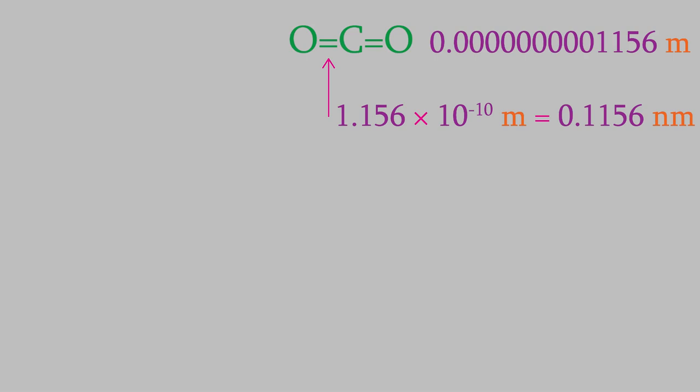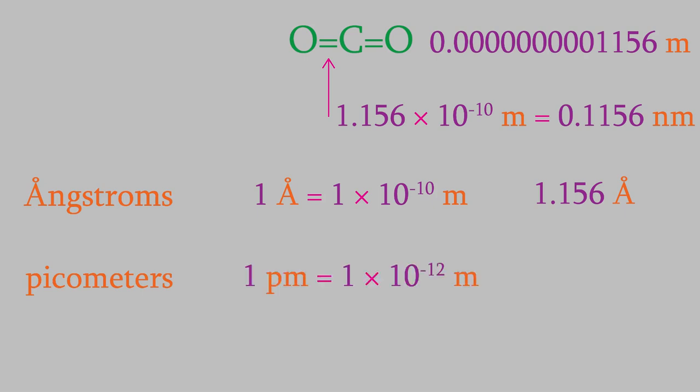One common unit is the angstrom, which is 1 times 10 to the minus 10 meters. That would make the carbon-oxygen bond 1.156 angstroms. It's also common to give bond lengths in picometers. A picometer is 1 times 10 to the minus 12 meters. So, that would make our bond 115.6 picometers.